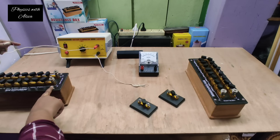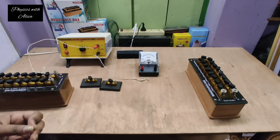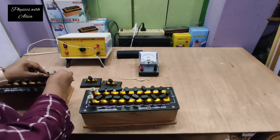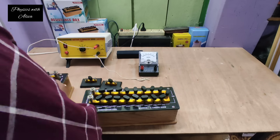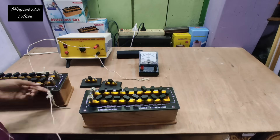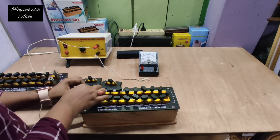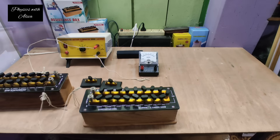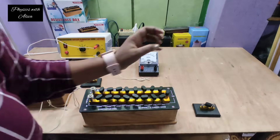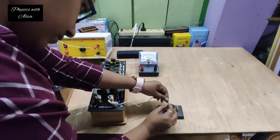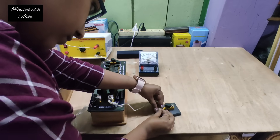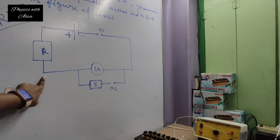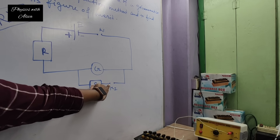According to the circuit diagram, we will connect the positive end of the battery with the resistance box R. The other end of R will be connected to resistance S. The other end of S is connected with key K2. You can see in the diagram the one end of R is connected with one end of S, and the other end of S is connected with one end of key K2.